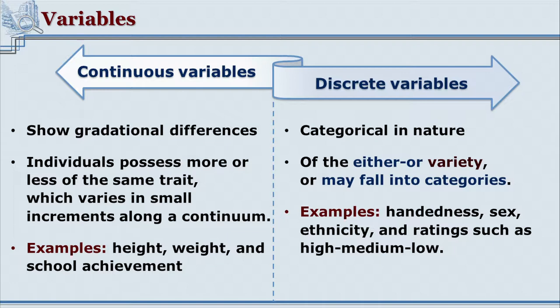Suppose level of intelligence is to be measured — it could be divided as low, medium, and high. The researcher will operationally define each category, giving the range of scores for low, medium, and high. In this case, the variables and scores can be discretely classified into various subcategories. So continuous and discrete variables represent one form of classification of variables.